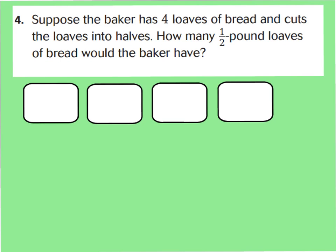All right. Let's take a look at number four. It says, suppose the baker has four loaves of bread and cuts the loaves into halves. How many half-pound loaves of bread would the baker have? Go ahead and pause the video, and I want you to try this one by yourself. Don't forget, draw the model, and then I want you to write your division problem as well as your related multiplication sentence to figure it out. For this one, you should have cut each one into half, and then you count up all your half pieces, and you can see that you have eight half-pound loaves. Your division sentence was four divided by one-half will equal eight, and our related multiplication sentence is four times two would equal eight pieces.